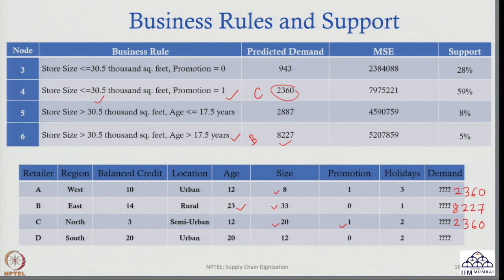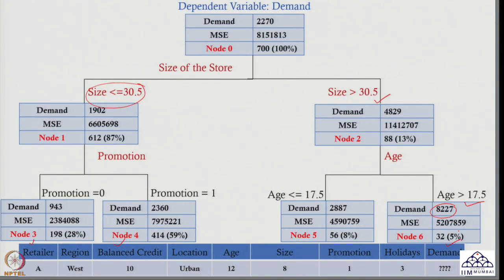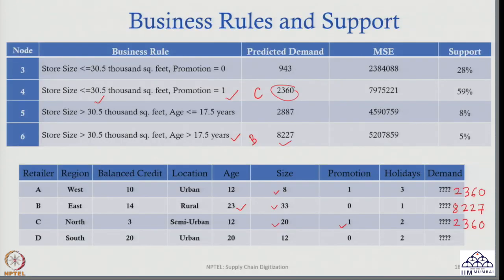So for this kind of retailer located in the North region, balanced credit of 3 lakh rupees, semi-urban area, 12 years of age, store size of 20,000 square feet, promotional offer was given, and 2 holidays during that week — I would predict the demand will be 2,360. In the complete decision tree: size is 20,000 square feet which is less than or equal to 30.5 thousand square feet and promotion was given, so I land at 2,360.